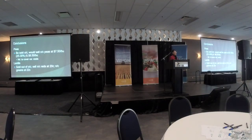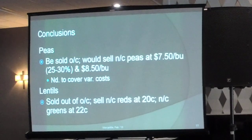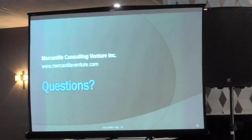In conclusions, I would be sold on old crop peas. On new crop, $7.50 to me is definitely a sale, and even $8.50 for green peas. On lentils, selling reds for new crop is a no-brainer, and greens maybe at 22 cents. Any questions?